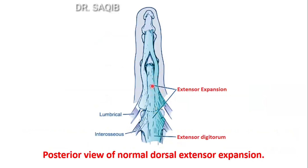This is the extensor expansion. This is the central tendon attached to the base of the middle phalanx, and these are the lateral slips going and merging, attached to the basal sides of the proximal phalanx.